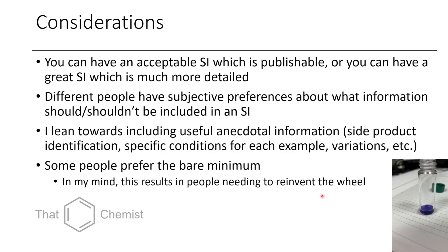Personally, I lean towards including a lot of information which is more anecdotal — like the specific side products that formed, here's a scheme, these are the specific conditions used for this example — where some people would prefer to minimize that. Some people prefer the bare minimum, wanting as short an SI as possible, but in my mind this results in other researchers reinventing the wheel. You've already had to purify your compound once, you did a TLC, you did a column — just record it, write it down, it takes like five seconds.